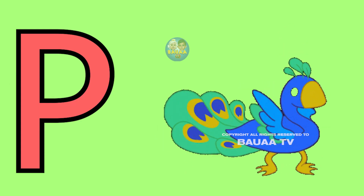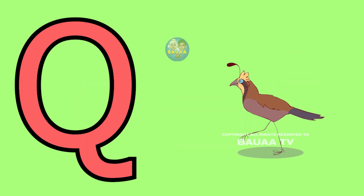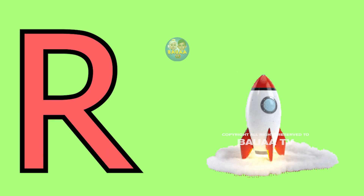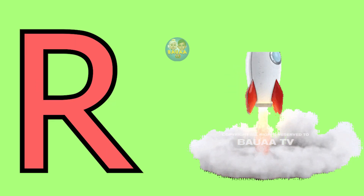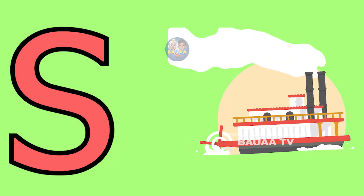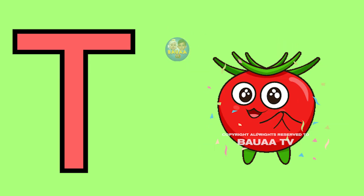B for peacock, Q for quill, R for rocket, S for ship, T for tomato.